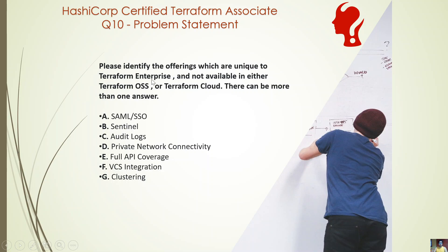The question: please identify the offerings which are unique to Terraform Enterprise — not available in either the Terraform open source version or the Terraform Cloud version. There can be more than one answer. Terraform comes in three versions: open source, which you can download and use; Terraform Cloud, which is a PaaS-type offering where they host Terraform for you, available in free, team, and team-and-governance plans; each adds advantages geared towards enterprise management and team collaboration.